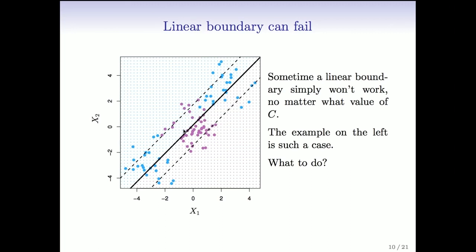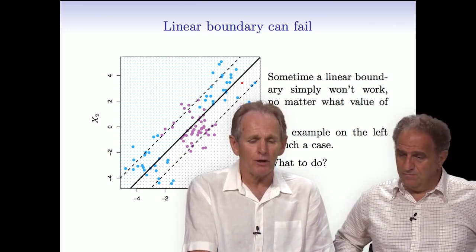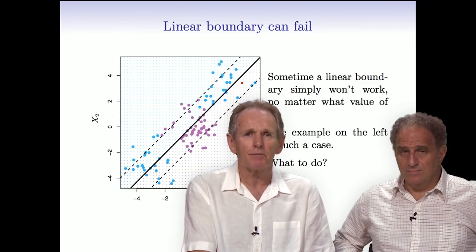You can see we've got the mauve set of points exactly in the middle of a crowd of blues on one side and another crowd of blues on the other side. And no matter what we do, we won't get a good classifier. What we'd like to do is bend the margin, and we're going to talk about ways of how we do that in the next segment.